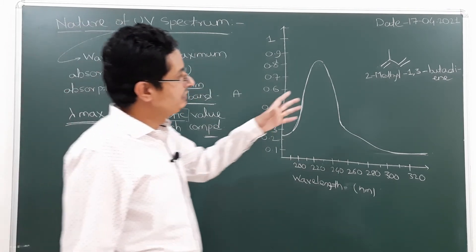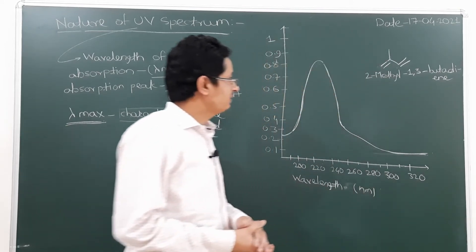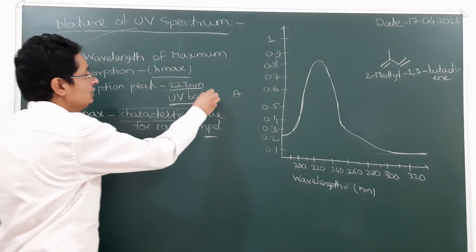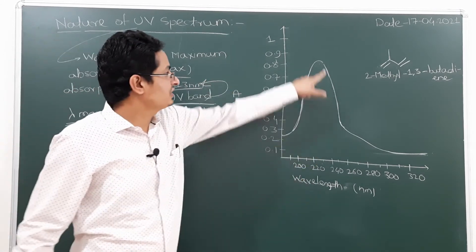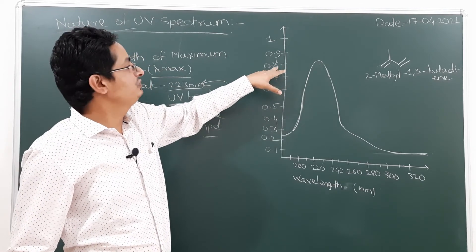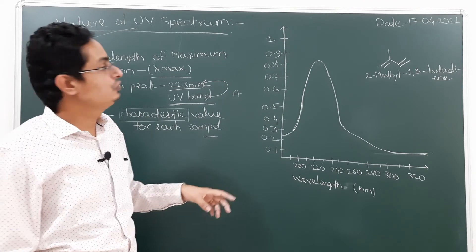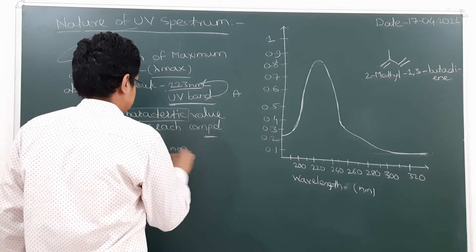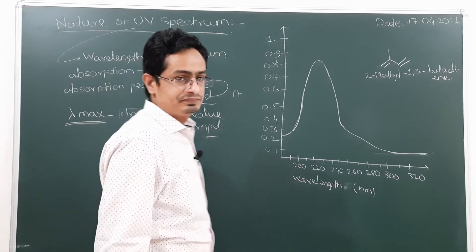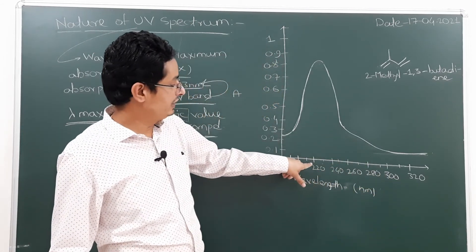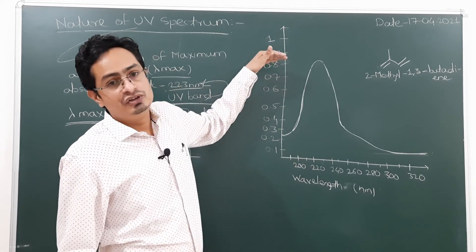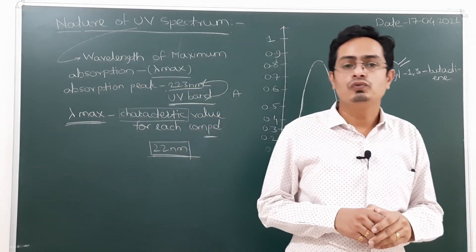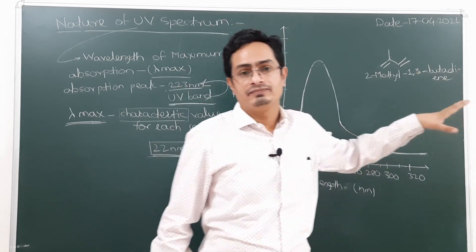For 2-methyl-1,3-butadiene, the UV band is at 223 nanometers. The UV band at 223 nanometers has a maximum absorbance of 0.8, and hence the lambda max value for 2-methyl-1,3-butadiene is 223 nanometers.